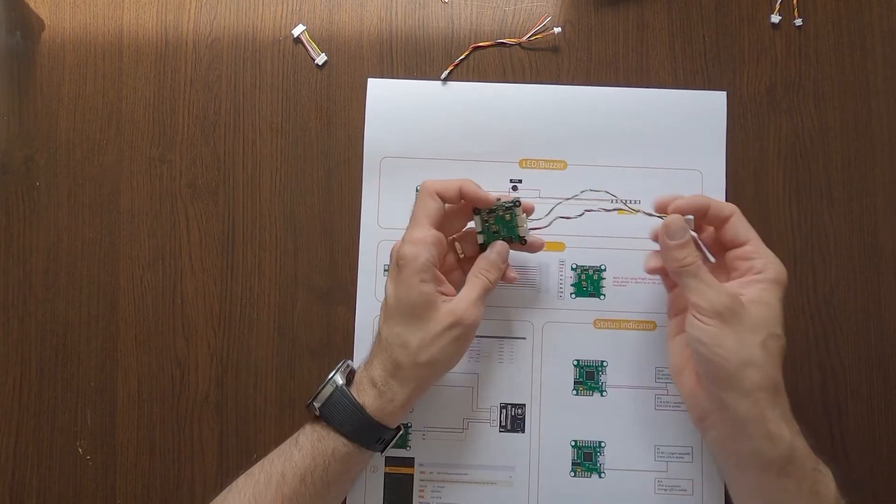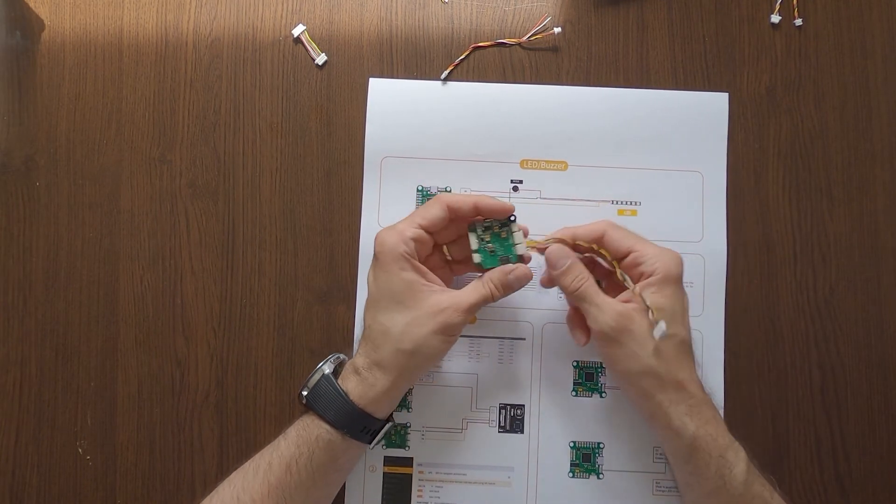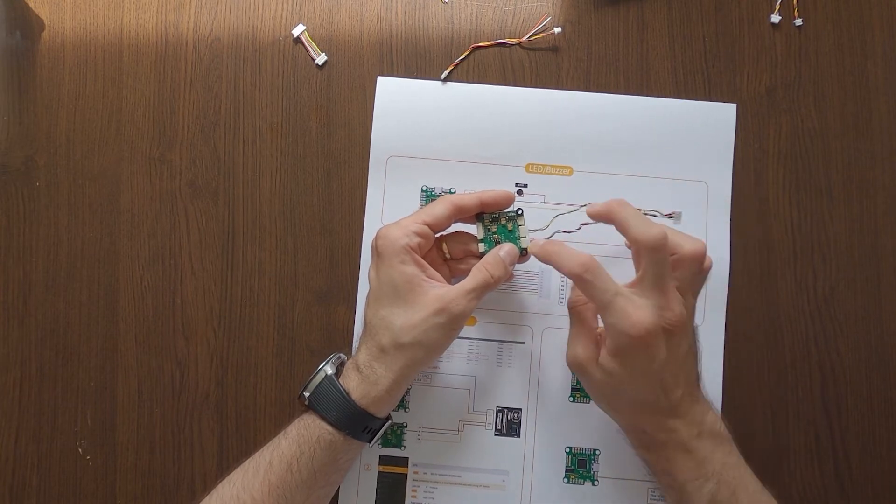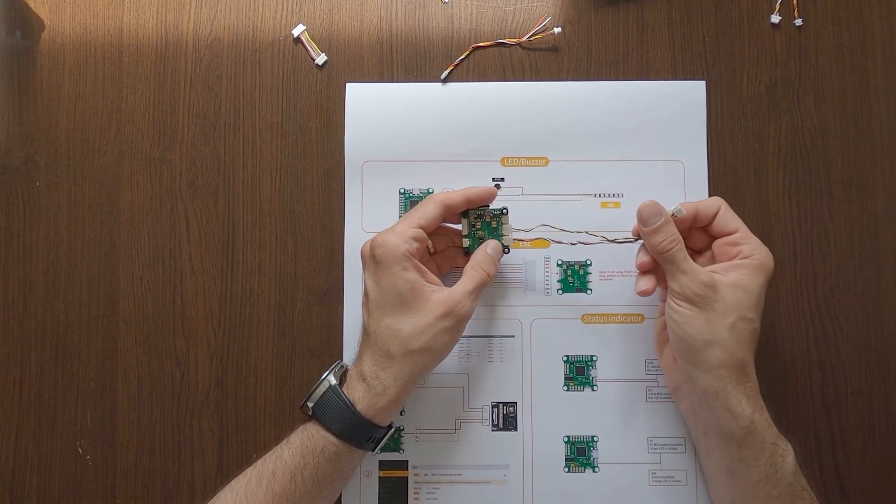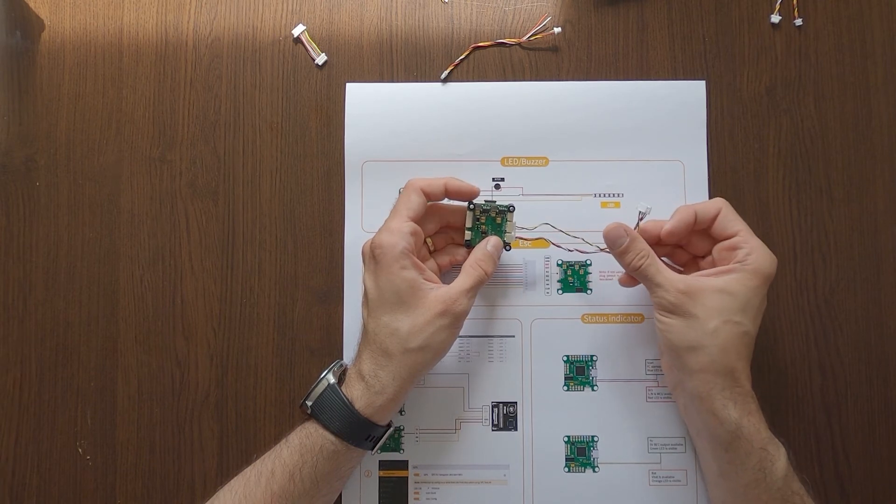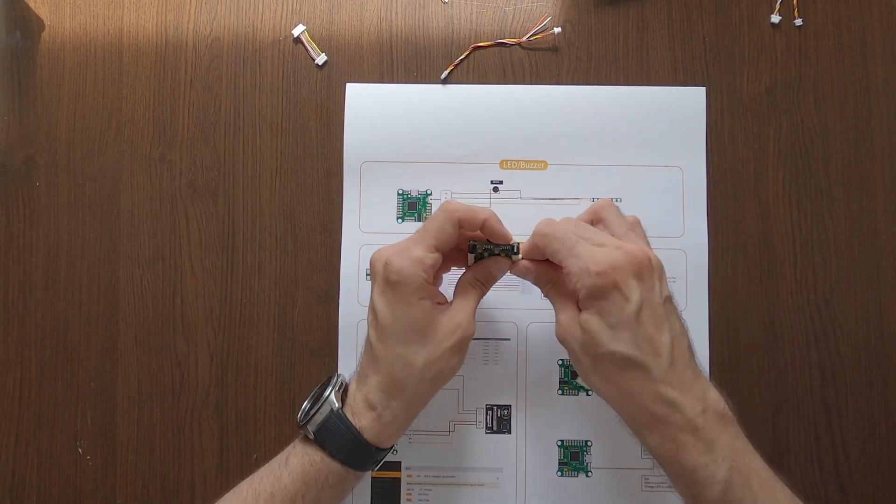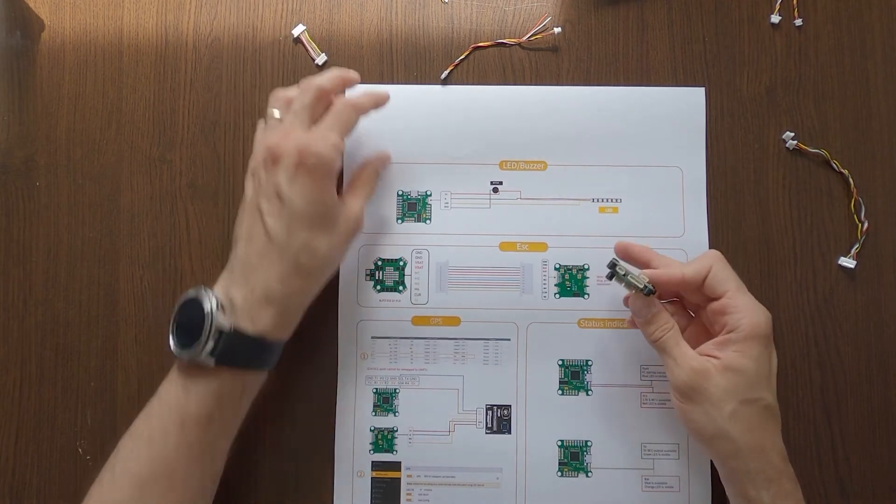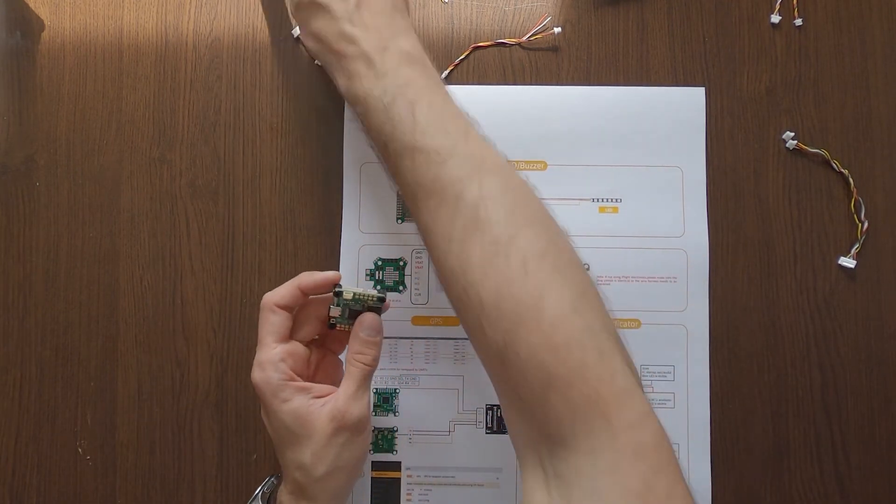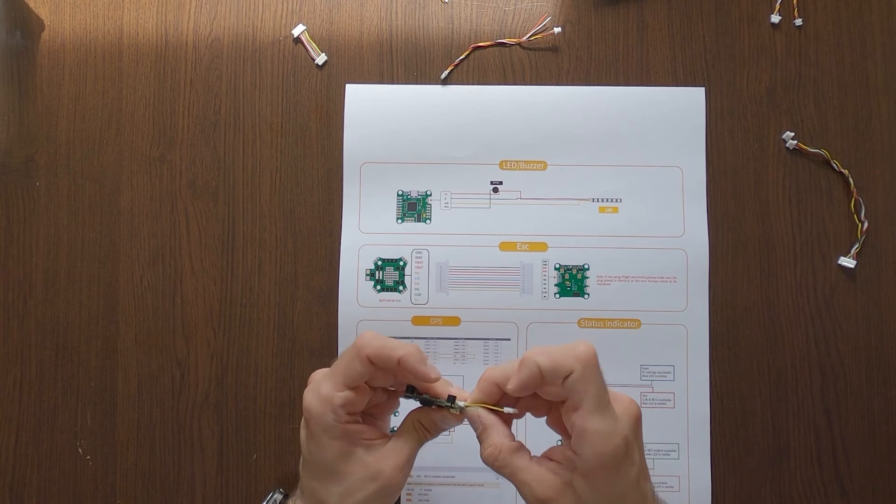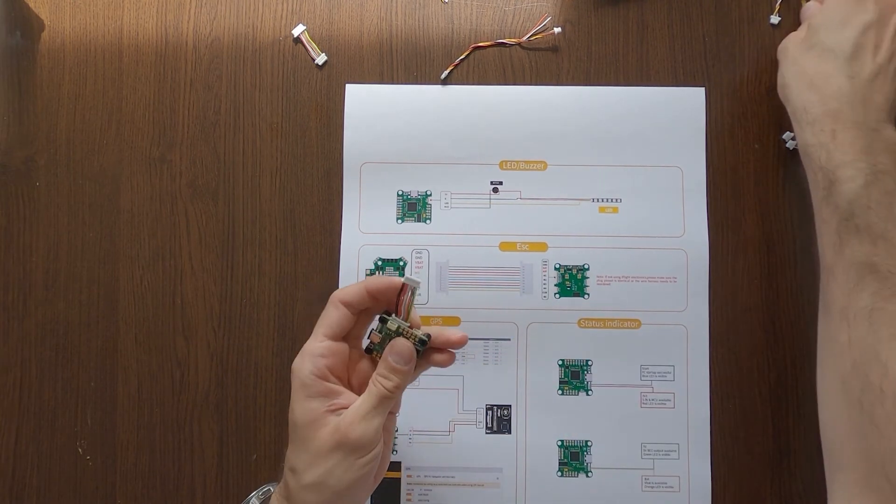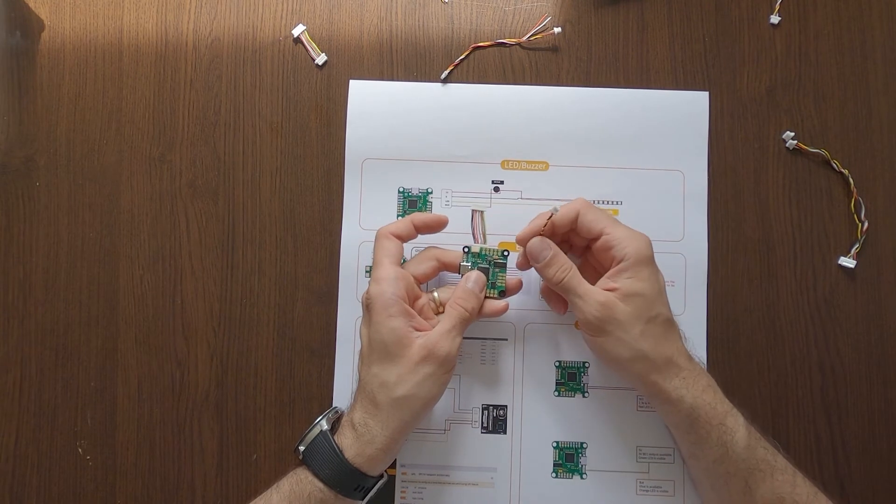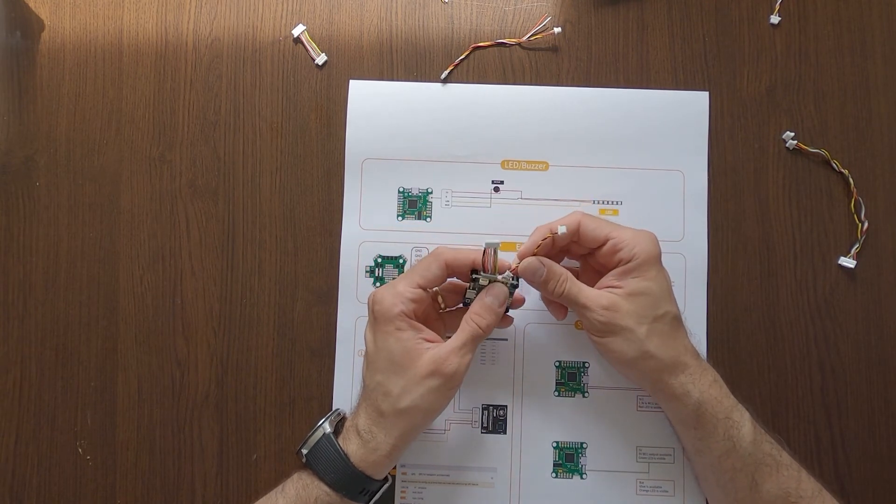For the air unit you need this connector and these two plugs and it's simple plug-and-play to the air unit. That's basically it. So we have the black for the ESC.